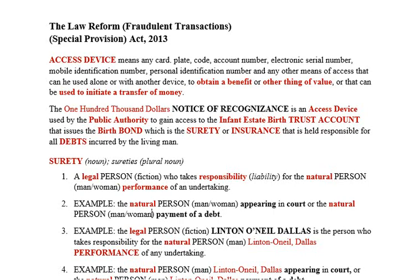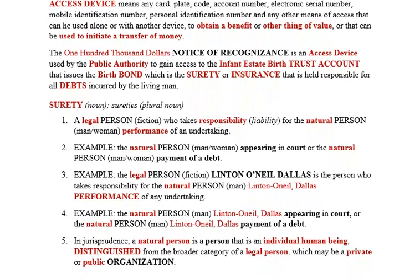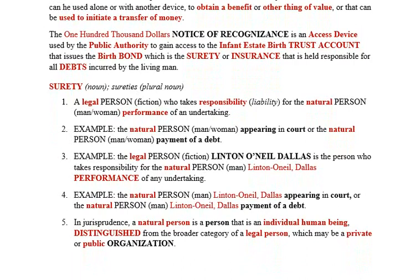That issues the birth bond, which is the surety or insurance held responsible for all debts incurred by the living man. A breakdown of surety: surety is a legal person of fiction who takes responsibility or liability for the natural person — man or woman — for the performance of any undertaking. For example, the natural person man or woman appearing in court.